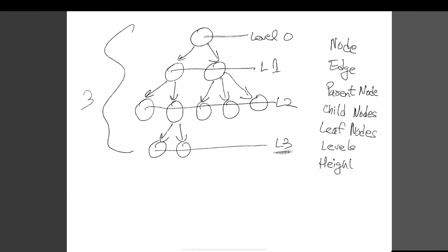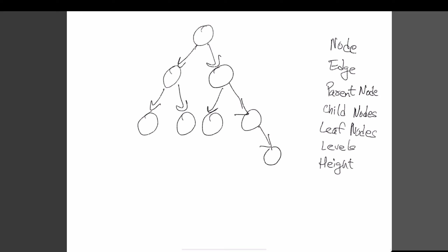The next term is the depth of a node. Let's pick a random node — if we had to find the depth of this node, we basically start walking towards the root. We start with depth zero, then as we go to its parent we arrive at one, then two — so the depth of this node is two. The depth of a node is its distance from the root. Taking another example: if we look at this other node and start walking towards the root, that's one — so the depth of that node is one.